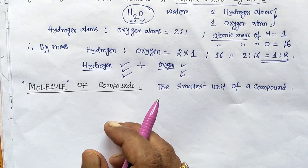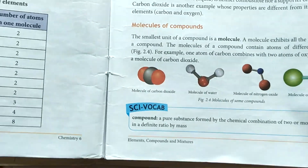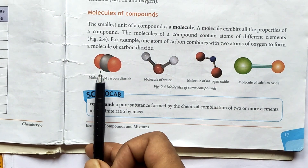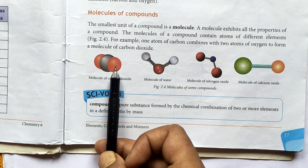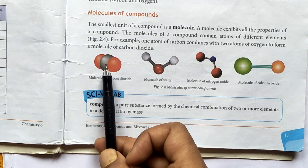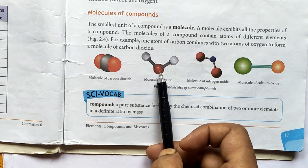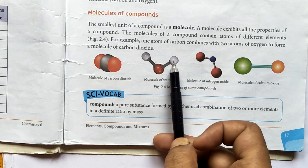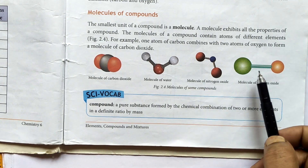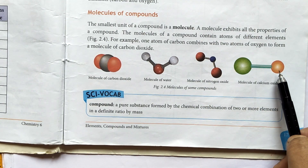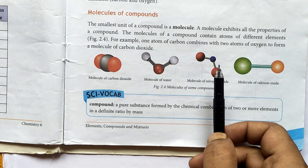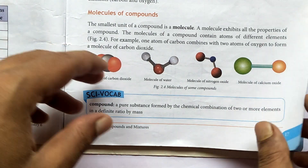Now let us look at how to represent molecules of particular compounds using ball-and-stick models. In your book, the black color represents a carbon atom and red represents oxygen — so two oxygen atoms combine with one carbon atom to form carbon dioxide. Similarly, for water, one oxygen and two hydrogens are shown. Nitrogen dioxide has one nitrogen and two oxygen atoms. Calcium oxide shows one calcium and one oxygen.